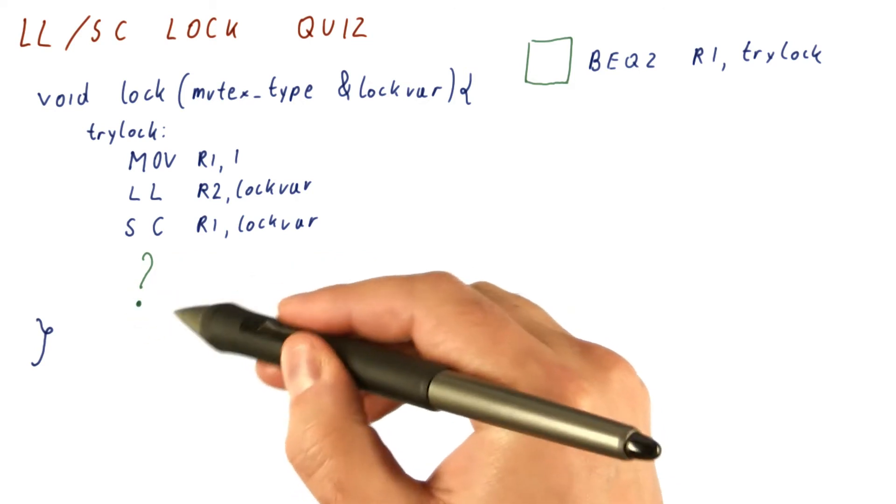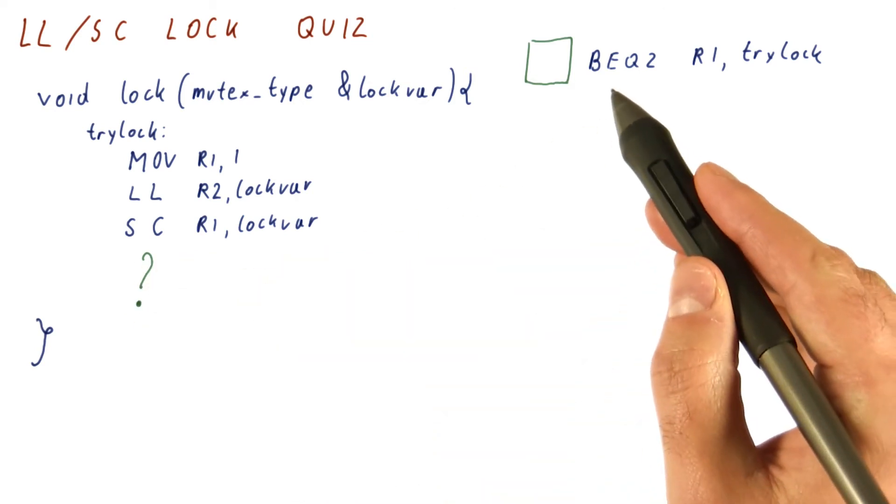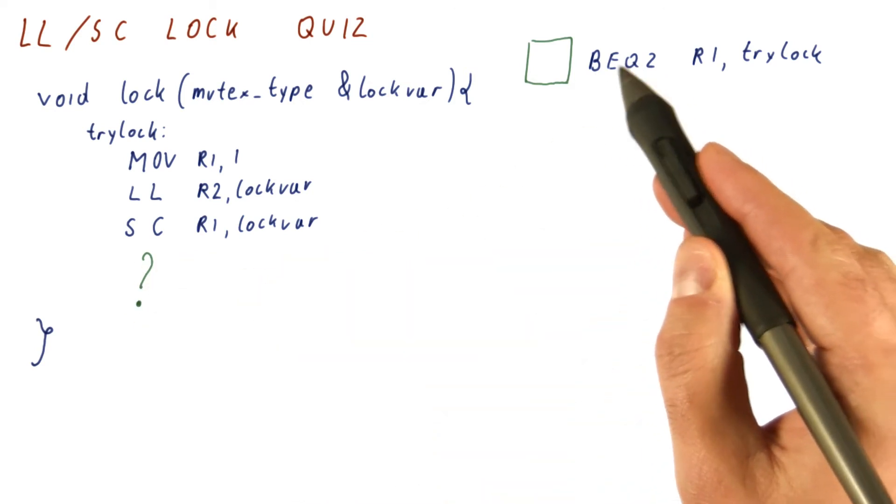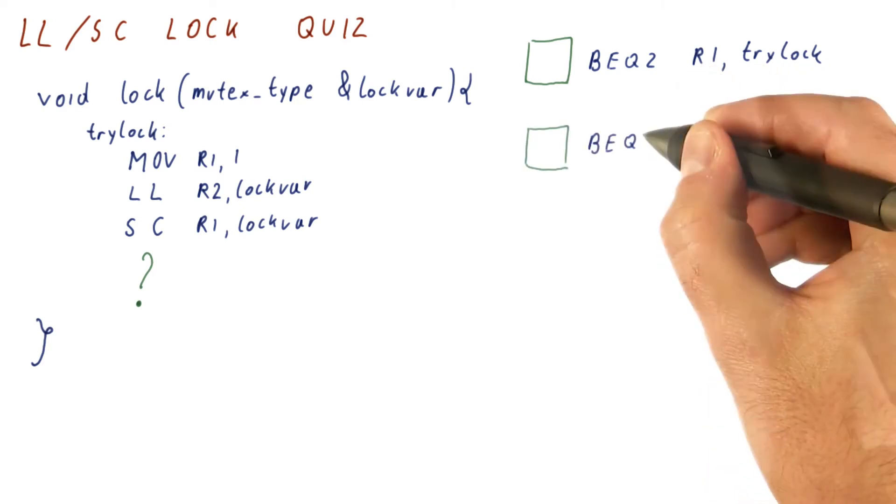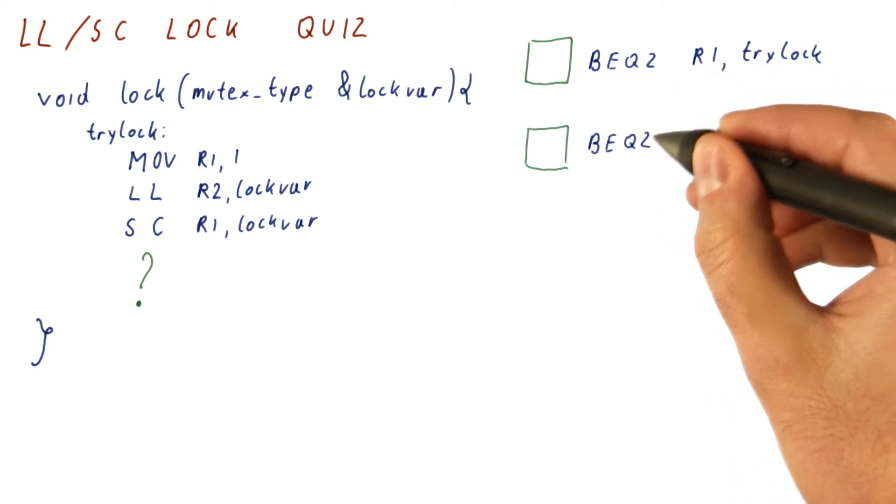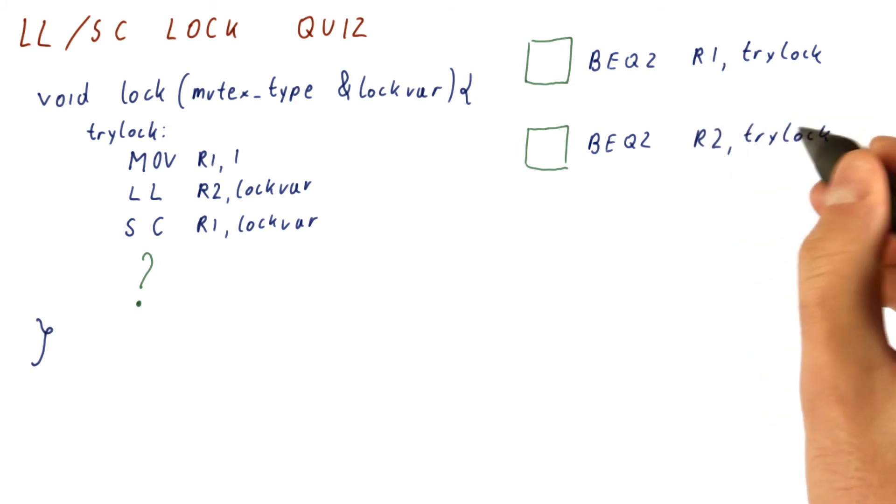The first option for where the question mark is, is simply to do a branch on equals 0 R1 trylock. The second choice here is branch on equals 0 R2 trylock.